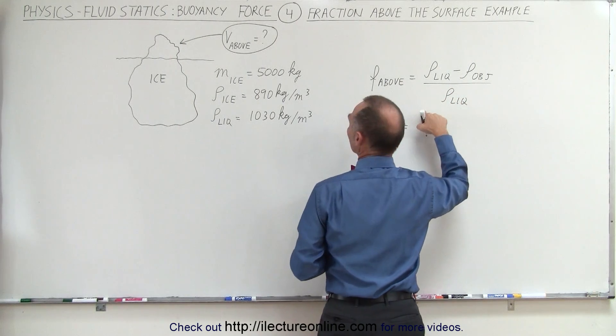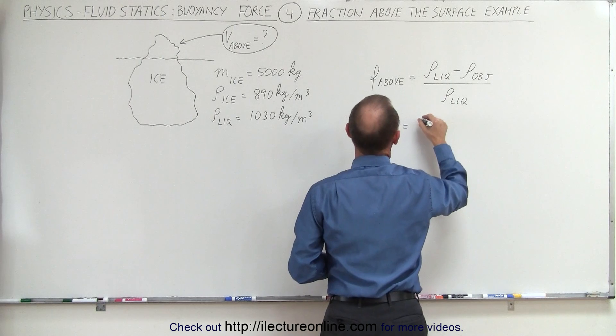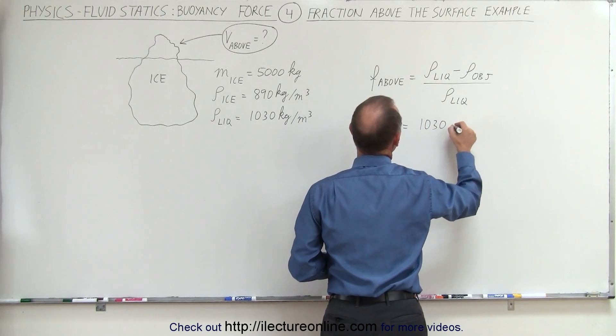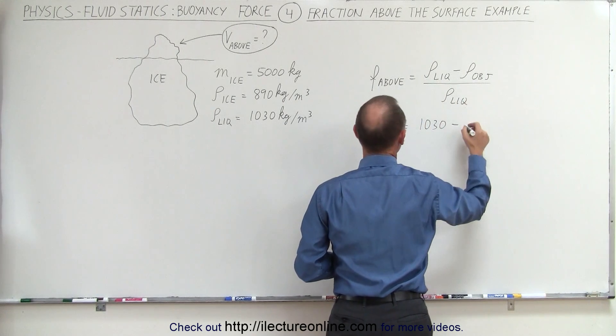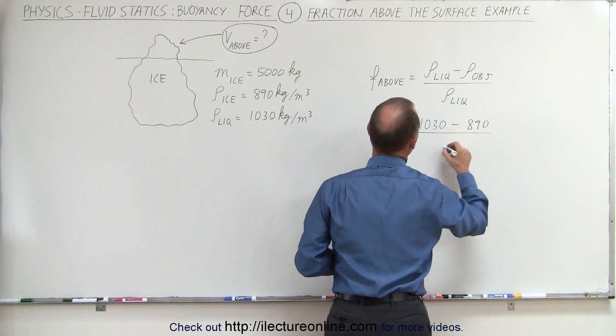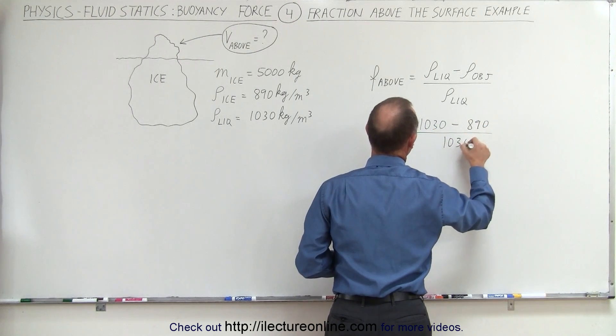In this case, the density of the liquid is 1,030 minus the density of the object, 890, divided by the density of the liquid, which is 1,030.